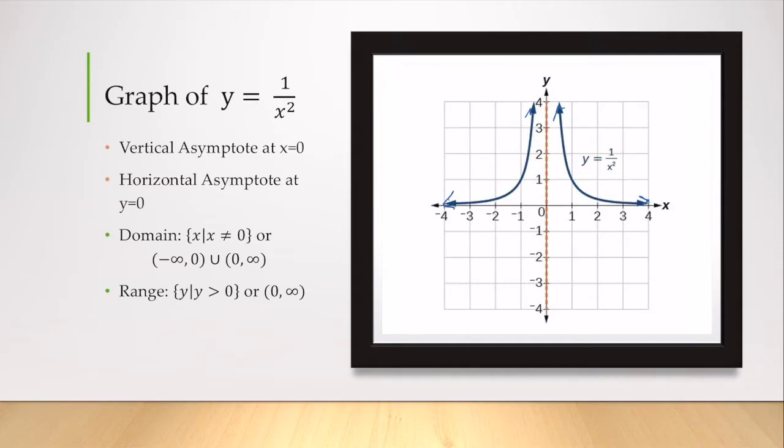Just the same here, I have a vertical asymptote of x equals 0, because my denominator can never equal 0. 0 squared is 0, so this would be our vertical asymptote.